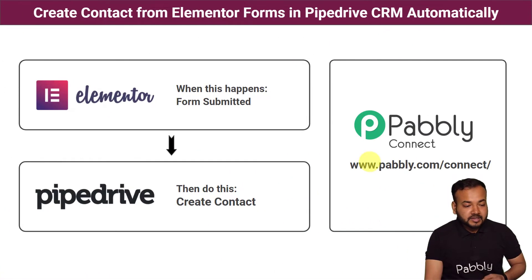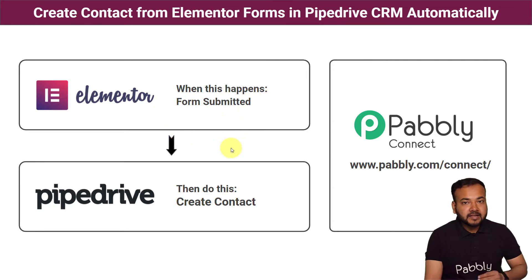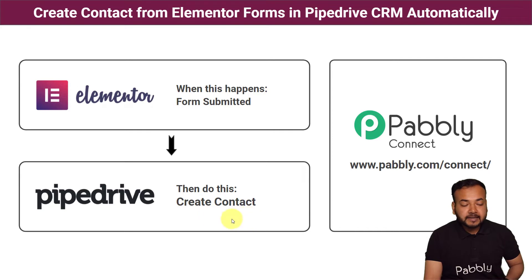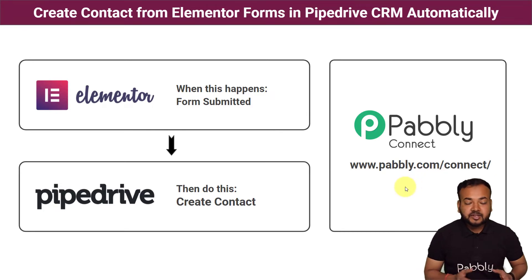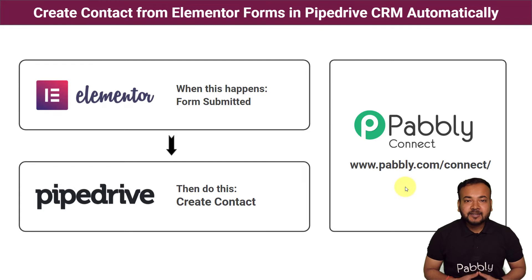To use automation to solve this issue, you just have to create a form with the help of Elementor form plugin and share this form with your audience or embed it in your website. As and when you receive a form submission from your lead or customer, the same person who filled this form is going to be created as a contact in Pipedrive CRM automatically. We are using Pabbly Connect, which is an integration and automation tool, and the best part is you will not require any coding skills or programming knowledge.